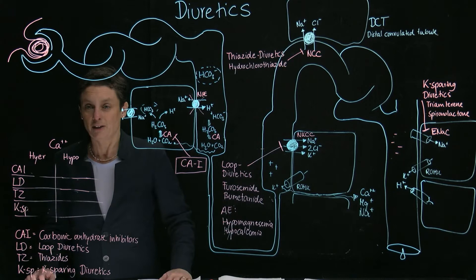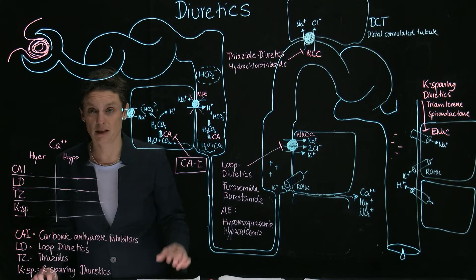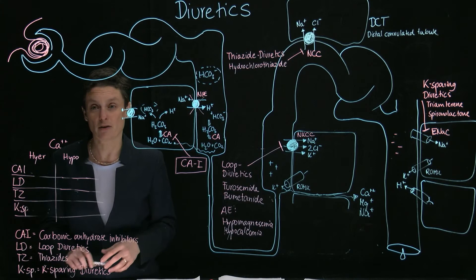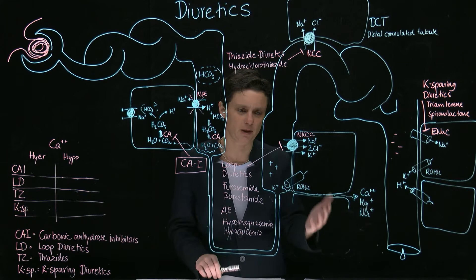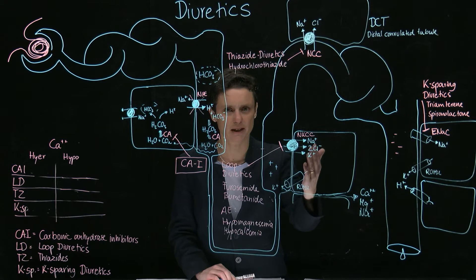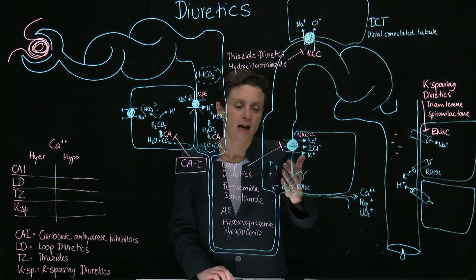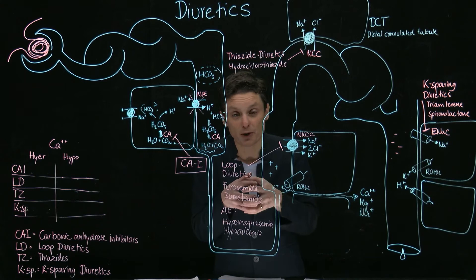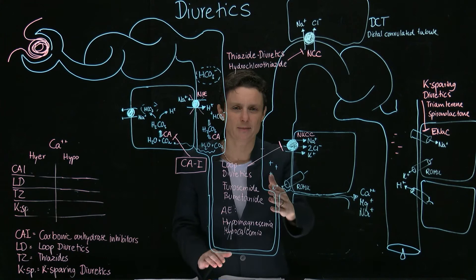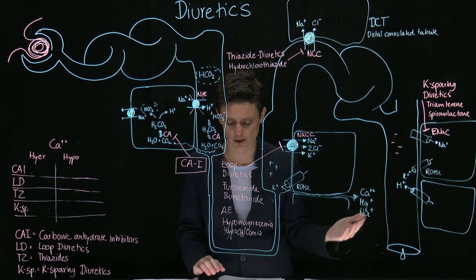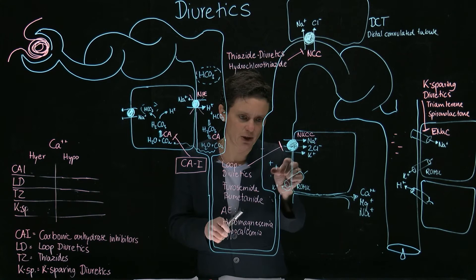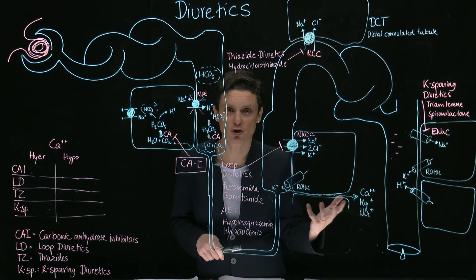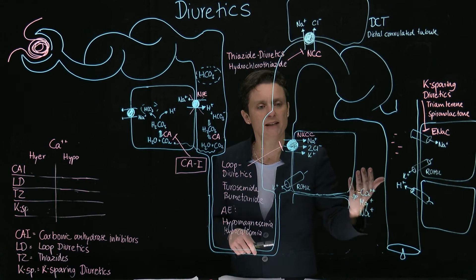Calcium is reabsorbed predominantly in the proximal tubule, but also in the thick ascending limb, both paracellularly. For loop diuretics, normally the NKCC takes up sodium, chloride, and potassium, but the potassium leaks right back out, creating positive charges in the tubule lumen. These positive charges passively drive paracellular reabsorption of calcium, magnesium, and sodium. When we block NKCC, we lose these positive charges and there's no driving force to reabsorb calcium and magnesium paracellularly — therefore, loop diuretics definitively lead to hypocalcemia.